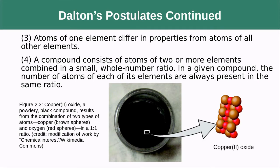His third postulate is that atoms of one element differ in properties from the atoms of all other elements. The fourth is that a compound consists of atoms of two or more elements combined in a small whole number ratio. In a given compound, the number of atoms of each element are always present in the same ratio — he was trying to explain how we have this myriad of different materials when it's all based on just a small set of elements.